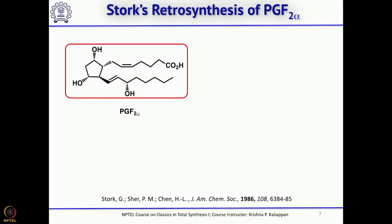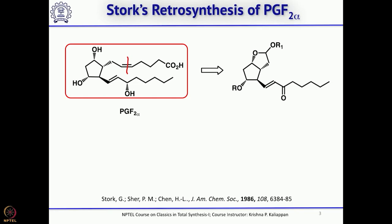For the retrosynthesis, the idea was: if you break this double bond on the left-hand side, you get an aldehyde, and on the right-hand side you get the corresponding triphenylphosphonium bromide, so you can do a Wittig reaction to get the cis double bond. Once you have this aldehyde, the alcohol will attack the aldehyde to form a lactol, and the lactol if protected becomes the precursor for PGF2α. You can also keep this as a carbonyl and later reduce it to get the corresponding allylic alcohol as required in the natural product.